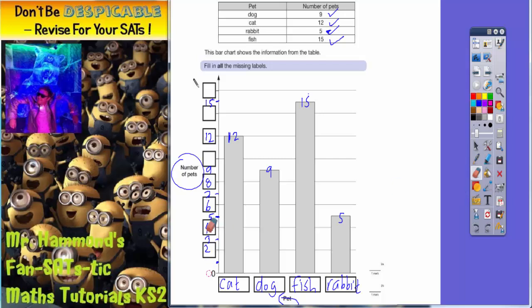So once you've worked out that it's going up in twos, all you need to do is go up in twos. So it goes zero, two, four, six, eight, ten.